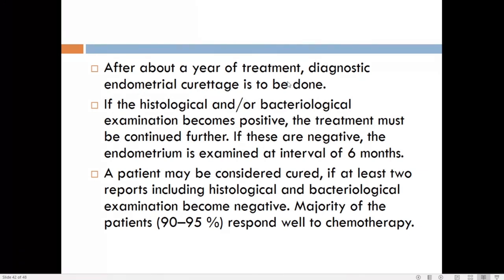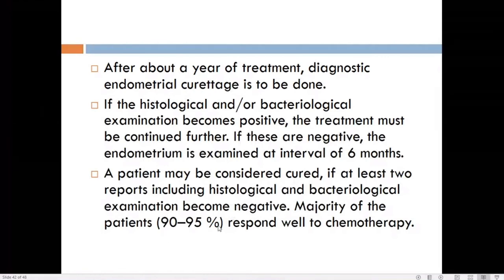After a year of treatment, diagnostic endometrial curettage is done to confirm cure. If histopathological or bacteriological examination remains positive, treatment is continued. If negative, the endometrium is examined at six-month intervals. A patient is considered cured if at least two consecutive reports — including both histological and bacteriological examination — are negative. About 90 to 95 percent of patients respond well to chemotherapy.